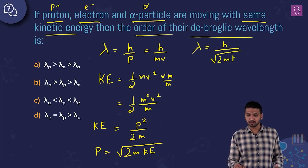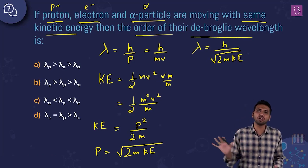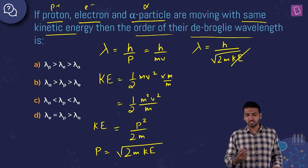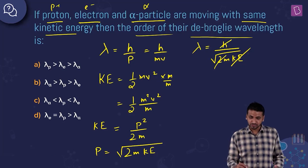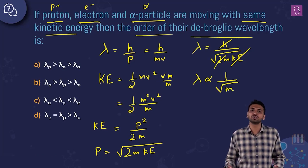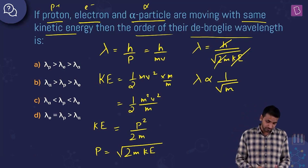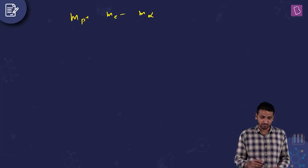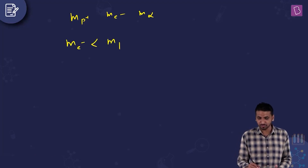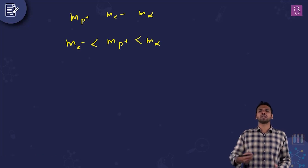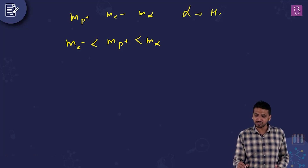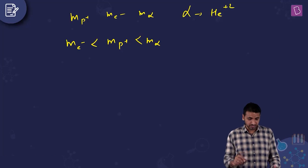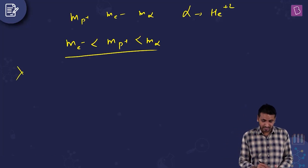Since kinetic energy is the same for all three particles, and 2 and h (Planck's constant) are constants, lambda depends only on the inverse of the square root of mass. Now comparing masses: the electron has the minimum mass, then the proton, and then the alpha particle, which is a doubly charged helium ion and has the greatest mass.